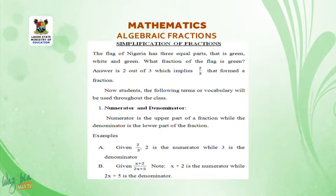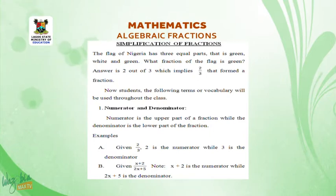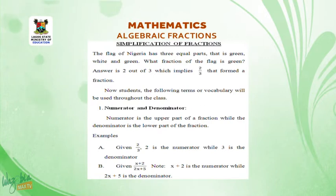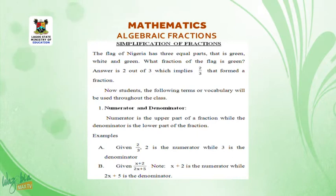Given 2 over 3: 2 is the numerator, while 3 is the denominator. Given x plus 2 all over 2x plus 5: x plus 2 is the numerator, while 2x plus 5 is the denominator.